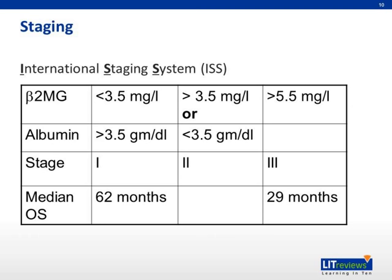The first reported staging for myeloma was that proposed by Durie and Salmon. This has been largely replaced by the International Staging System for myeloma, which was proposed by the International Myeloma Working Group in 2005. ISS, as it is popularly known, has been validated in many studies, and the most attractive aspect is that staging depends on only two variables. Beta-2 microglobulin denotes the tumor load, and albumin is a surrogate marker for the effect of myeloma on the subject.